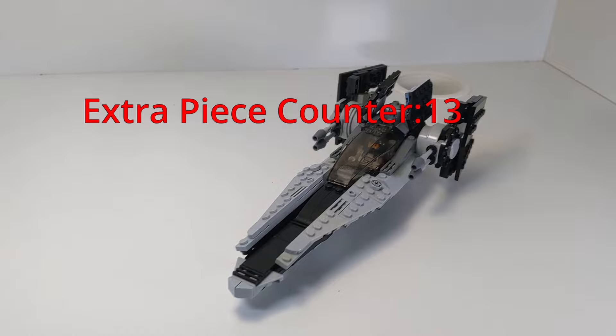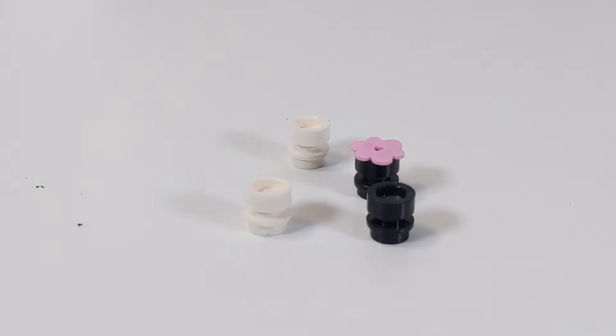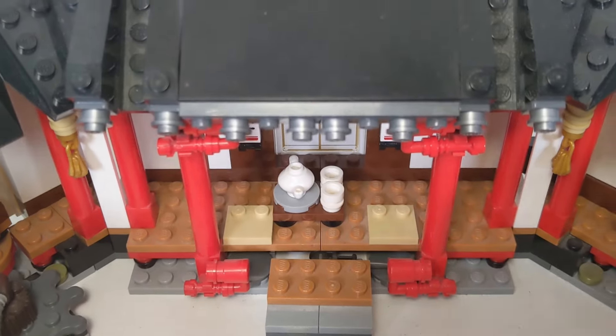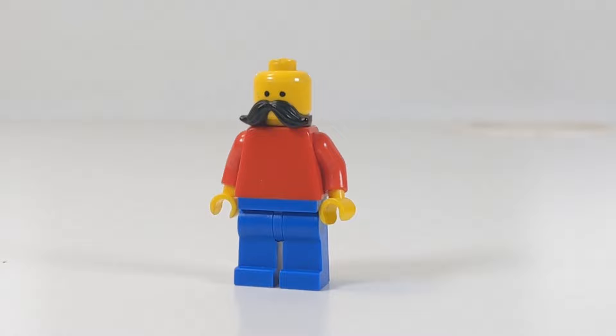So that's a total of 13 extra pieces. If you take a tile with a bar and a stud with a hole in it, you can create a teacup, which is the exact design used in the Monastery of Spinjitzu. There are also neck accessories that you can give to minifigures that need a little extra style.